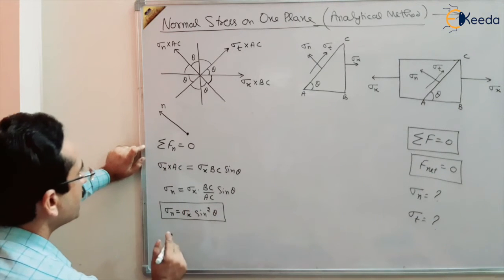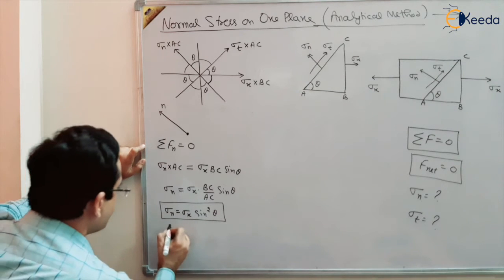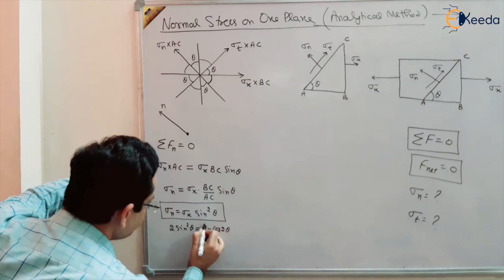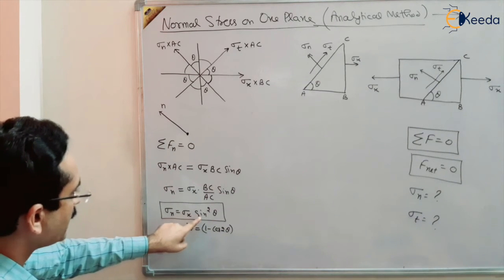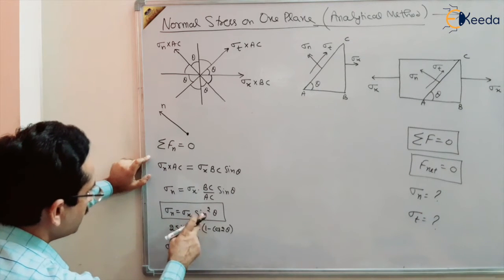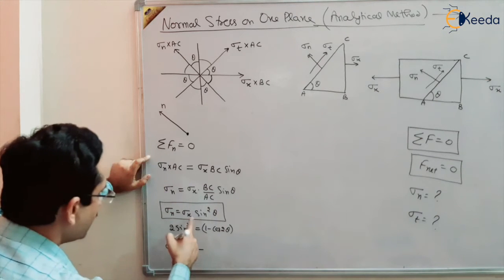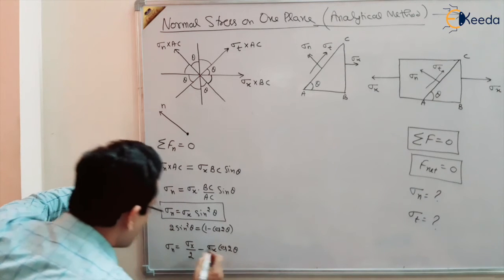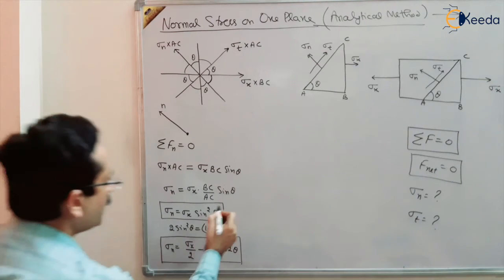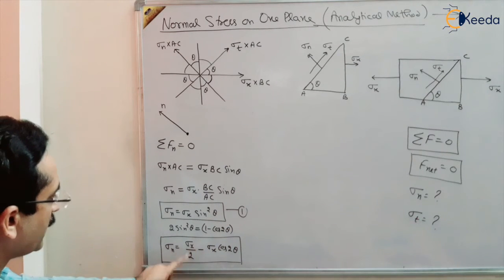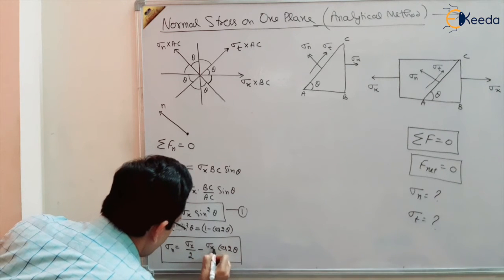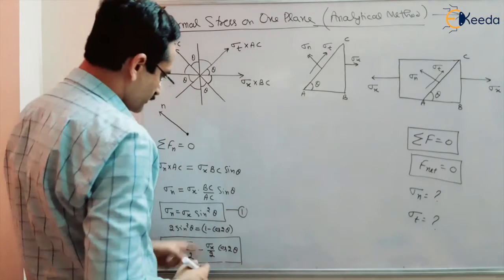This result can be further simplified. We know that 2 sin²θ = 1 − cos 2θ, so sin²θ = (1 − cos 2θ)/2. Applying this, sigma n equals sigma x by 2 minus sigma x by 2 times cos 2θ. So the equation becomes sigma n = σx/2 − (σx/2)·cos 2θ. Either form — sigma x sin²θ or the expanded version — can be remembered.